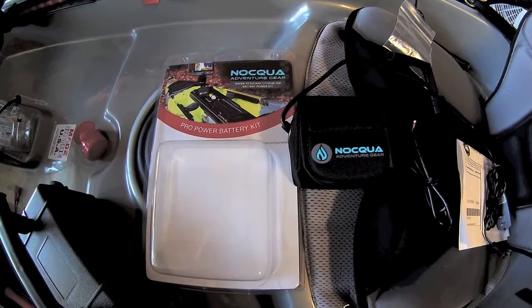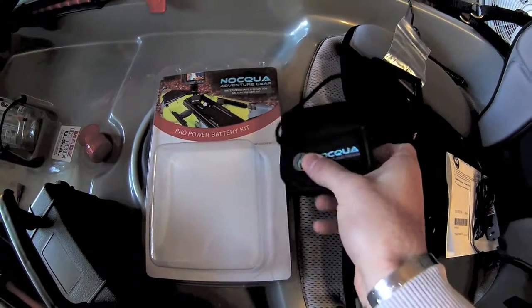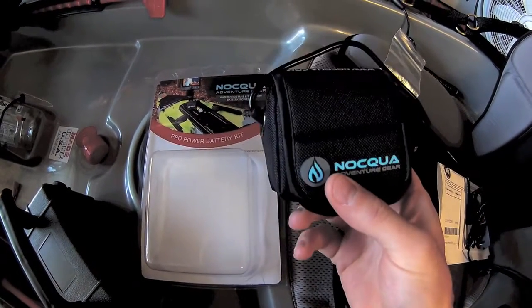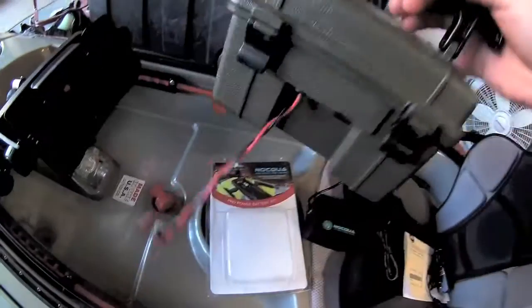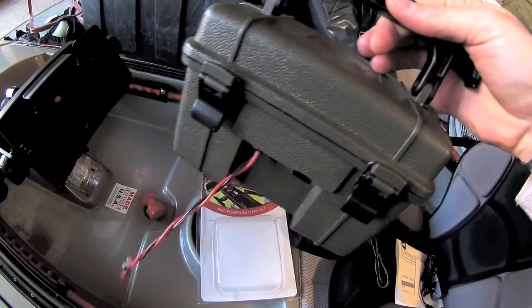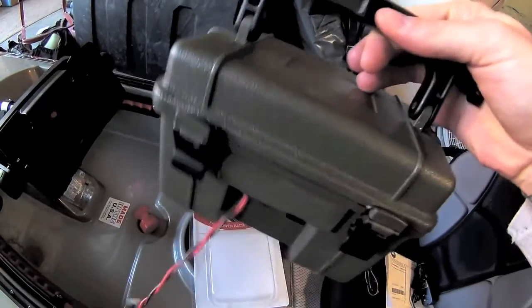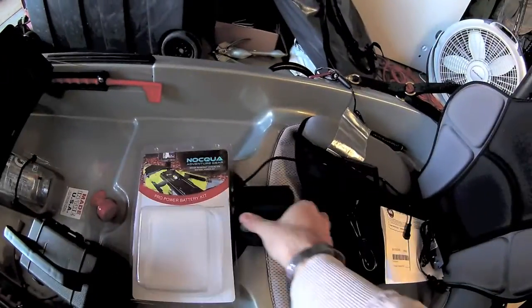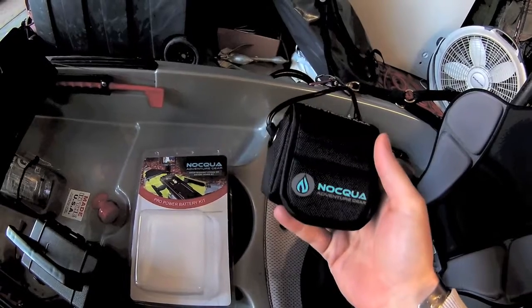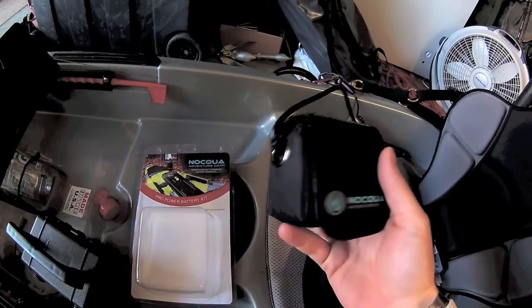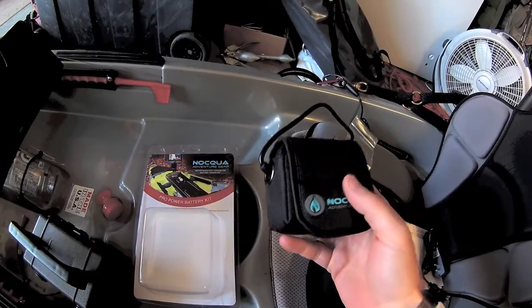This is the Nokia Pro Power battery kit. It's a lithium-ion based battery that's going to replace the traditional 12-volt deer feeder battery that a lot of kayak fishermen have used. Weight savings from this to this are amazing. I like to keep everything light on the kayak, so that's why I decided to buy this.